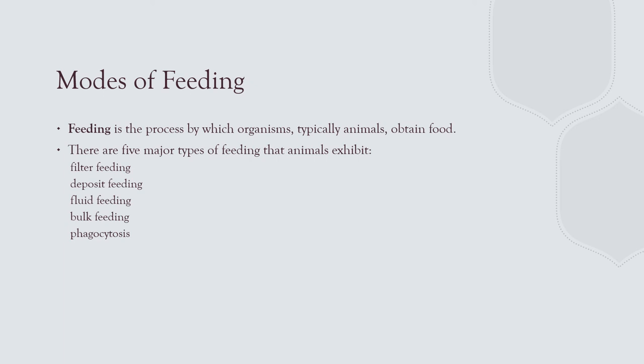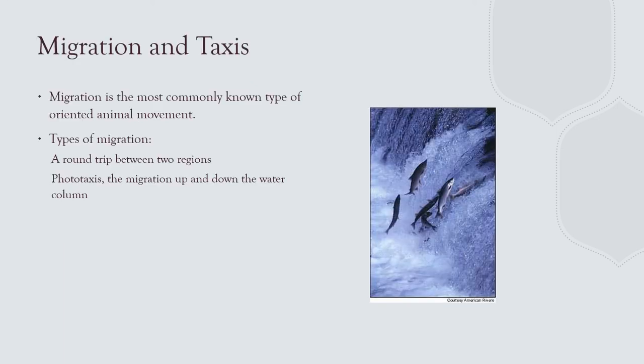All animals need to obtain food in various ways: filter feeding like sponges; deposit feeding like infauna eating through the ocean floor; fluid feeding like parasites; bulk feeding like whales and whale sharks straining the water; and phagocytosis — how cells engulf particles. Some organisms migrate like salmon. Others migrate vertically with light — phototaxis. Zooplankton rise to the surface at night to feed, then drop to the 200-meter level during the day to hide in the shadows and avoid predation.